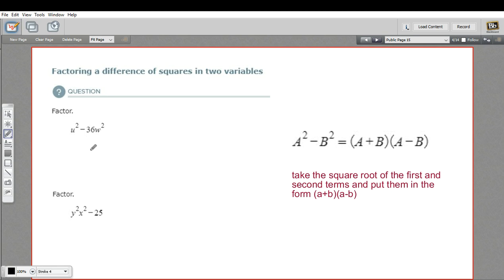In these problems, we have more than one variable, but that's okay. We can still apply the same rules as long as we can take the square root of each of these chunks.